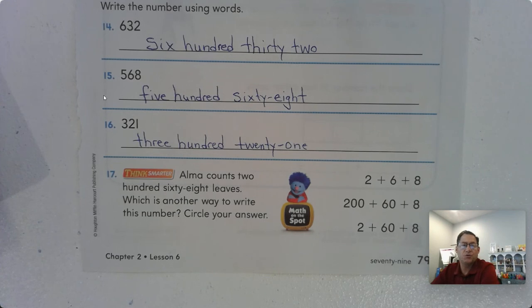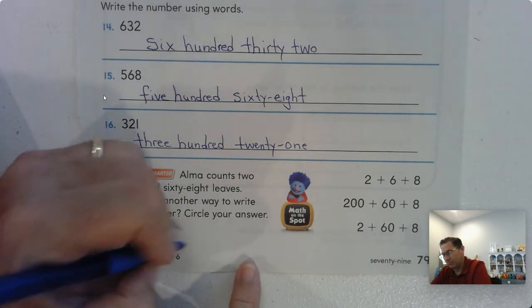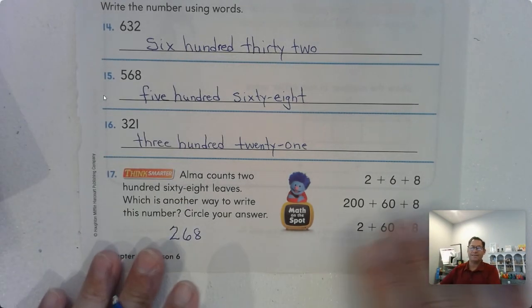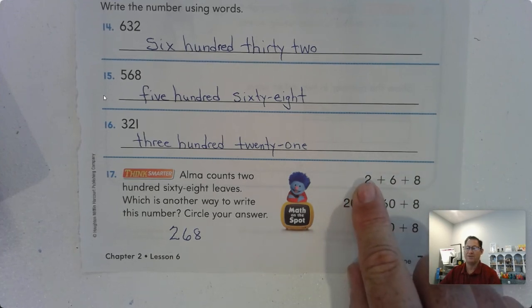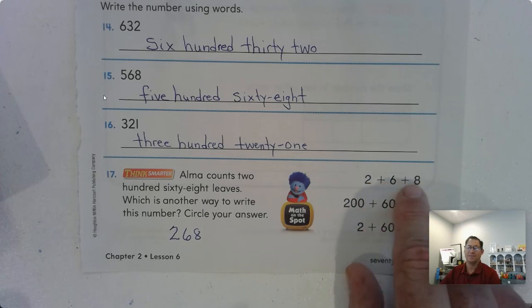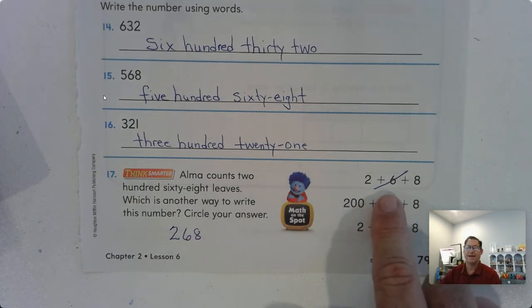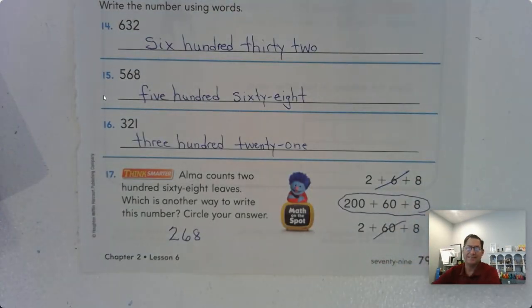Alma counts 268 leaves. What is another way to write this number? We have to circle our answer. So let's just write this number. 268 is what we've been practicing. We know we have two in the hundreds place and then 68. So we need one of these addition problems that's going to give us 268. This has the right numbers, but do you have two hundreds? No, that's only two ones. So this doesn't equal 268, that equals 16. So it's not that. 200, that's good. 60, that's good. Eight, that's good. Two ones, 60 tens or 60 and eight ones. Eight and two is 10, 10 and 60 is 70. So it's not that. So it's 200 plus 60 plus eight.